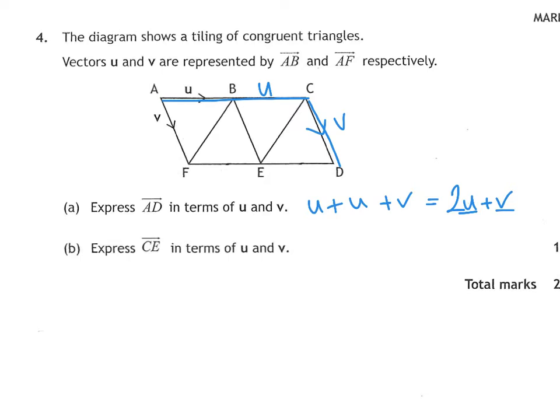Part b, we have to find c to e. So the path from getting c to e, if I change my colour pen for this one, c to e would be down this way, which is following v. And then along that way, which is going against the u. So that would be negative u. So v take away u.